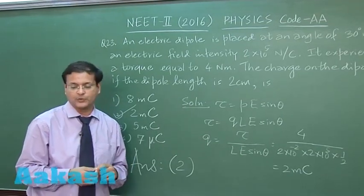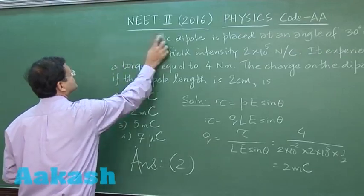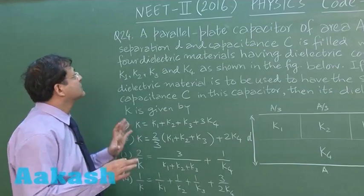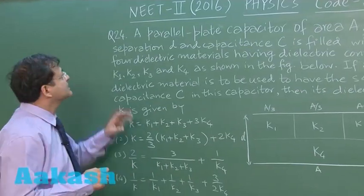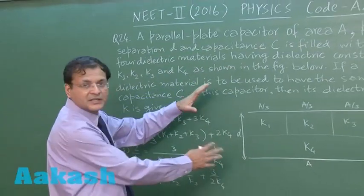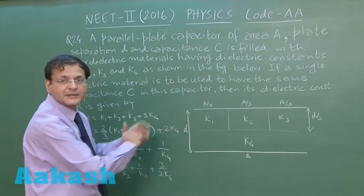Now let us switch over to question 24. Now this question 24 which is based on capacitance, it reads that a parallel plate capacitor of area A, as you can see in the diagram, the total area is A and it is filled with 4 types of dielectric.